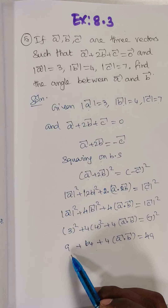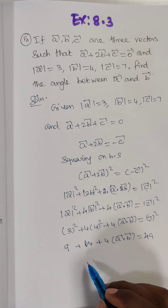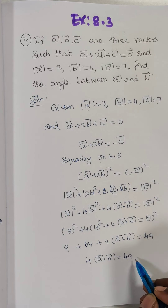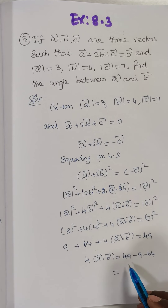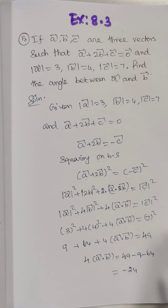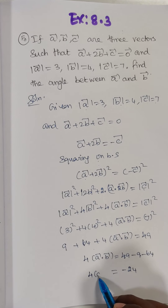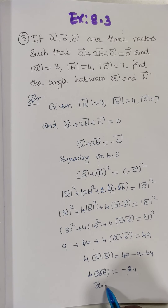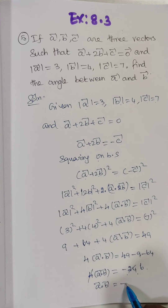So totally we have 9 plus 64. Taking the right-hand side: 4 into A vector dot B vector is equal to 49 minus 9 minus 64. So 4 into A vector dot B vector is equal to minus 24. Therefore A vector dot B vector is equal to minus 6.